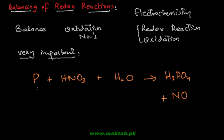There is a systematic way to do this. Initially, you will find the oxidation state of everything — this is your first step. In the first step, what you have to do is write the oxidation number of everything. For example, phosphorus oxidation number — I will write the whole equation.